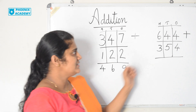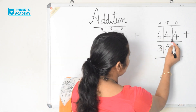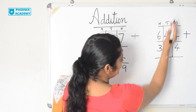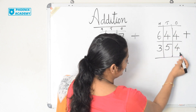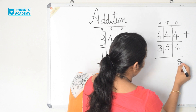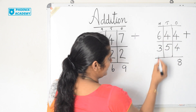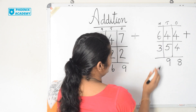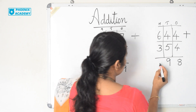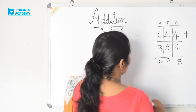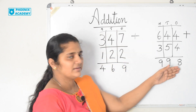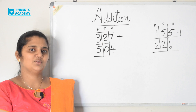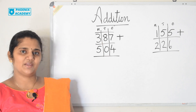Let's solve this one. 644 plus 354. Let's add the 1's. 4 plus 4 is 8 ones. 4 plus 5 is 9. Let's add the 100's now. 6 plus 3 is 9. So the answer is 998. Now let's learn adding 2 three-digit numbers with regrouping.